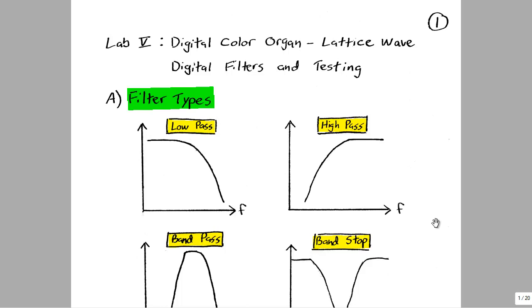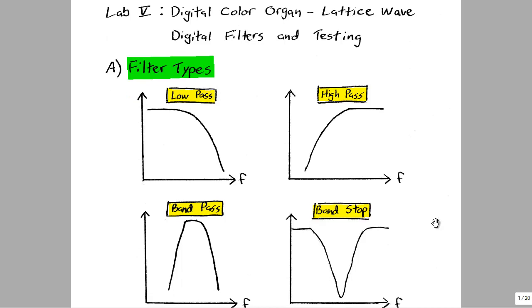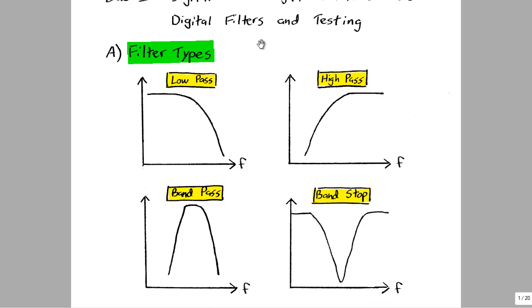Before we start, there are four different types of filters we're going to go over. First we have low pass, then high pass, band pass, and also band stop. These are the generic four filter responses that you're going to see in either analog or digital filters. It helps to have an overview of what we're looking at in this lab.